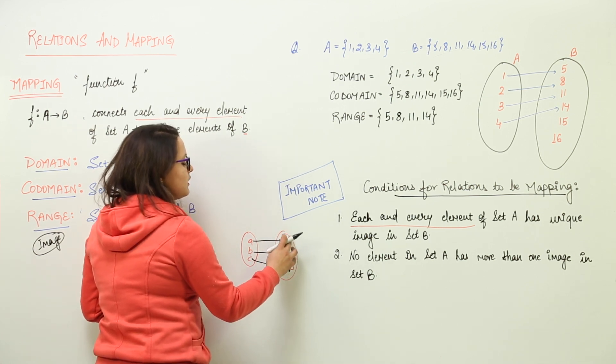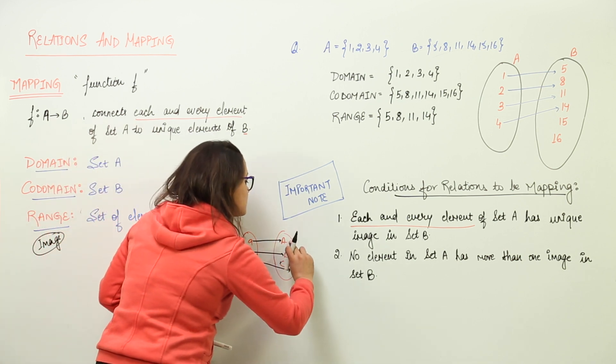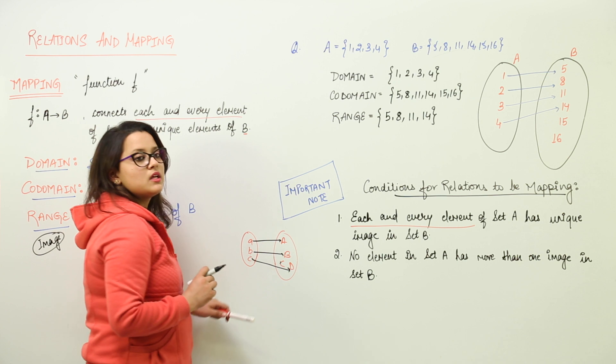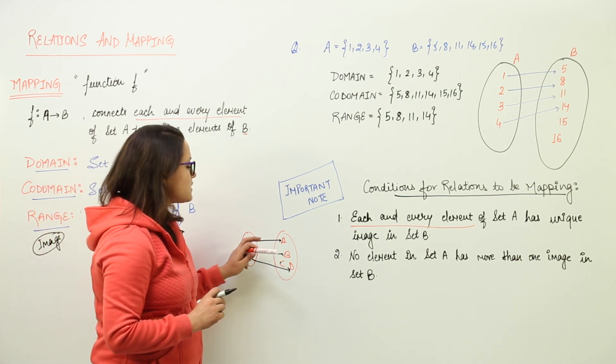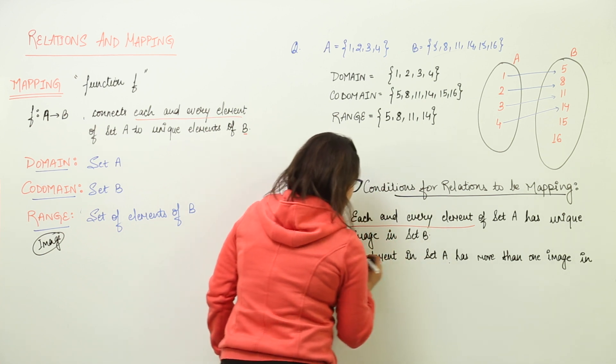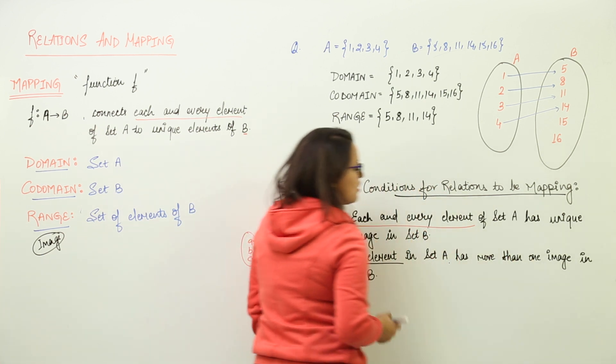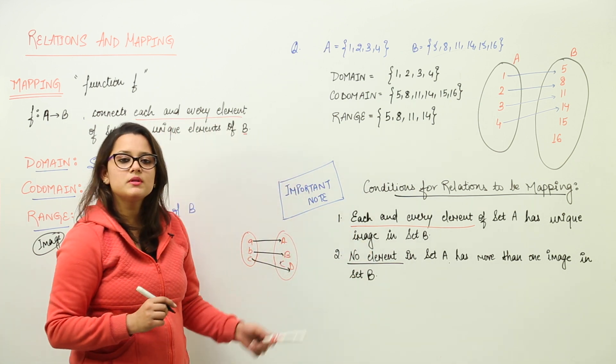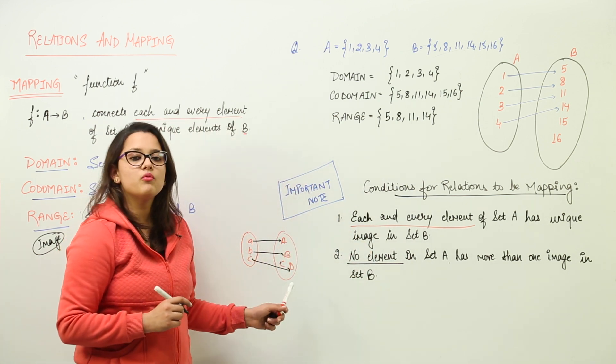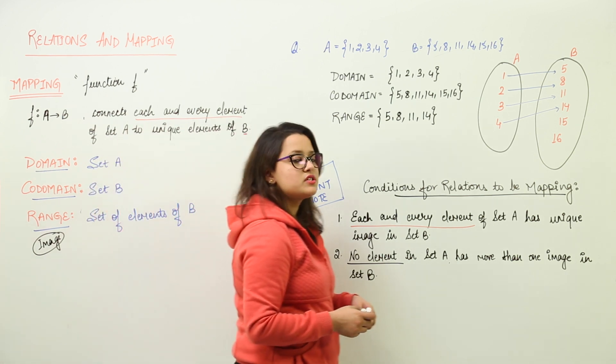It has to be mapped with some of the other value. There should be different values definitely of set B. And another thing, no two images can belong to the same domain. Or you can say, no two domains can have the same image. That is, no element in set A must have more than one image. More than one image is not possible. That is, one domain will have only one image. So, these were the conditions for relations to be mapped.